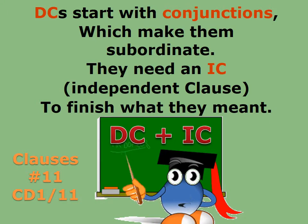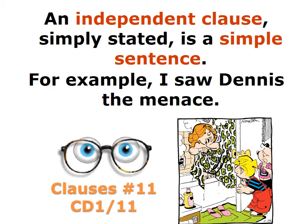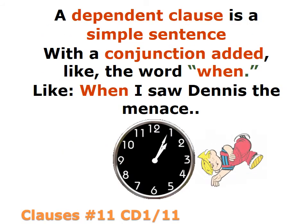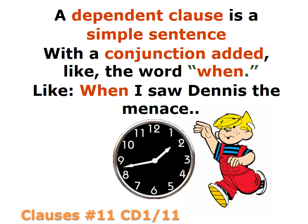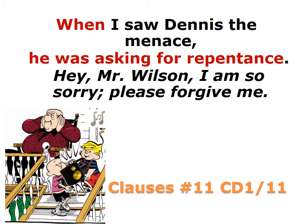Dependent clauses need an independent clause to finish what they mean. An independent clause, simply stated, is a simple sentence — for example, 'I saw Dennis the Menace.' A dependent clause is a simple sentence with a conjunction added, like the word 'when': 'When I saw Dennis the Menace.' Now that sentence no longer makes sense on its own. It needs an independent clause to finish its thought: 'When I saw Dennis the Menace, he was asking for repentance.'